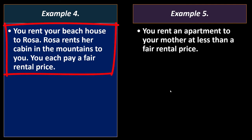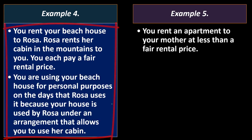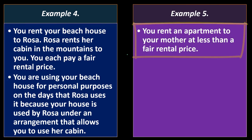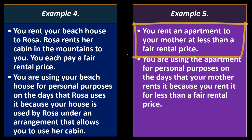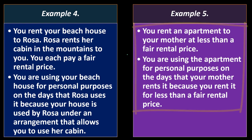Example 3: you own a rental property that you rent to your son. Your son doesn't own any interest in this property; he uses it as his main home and pays you a fair rental price — not five dollars or anything like that. Your son's use of the property isn't personal use by you because your son is using it as his main home, he owns no interest in the property, and he is paying you a fair rental price.